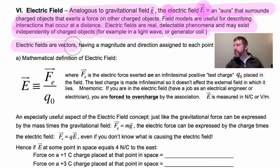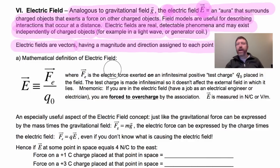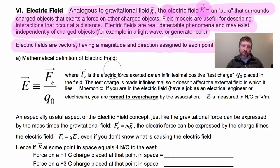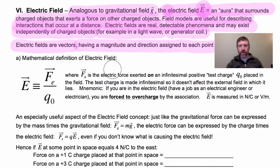Electric fields are vectors. They have a magnitude and they have a direction, and we typically assign a field value to every point in space. So every point in space, whether you're around a charge or not, we ask: what's the electric field at that point? Every point may have a different magnitude and direction of electric field.